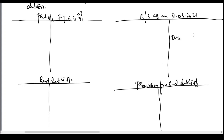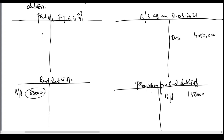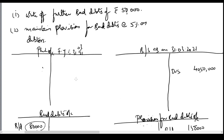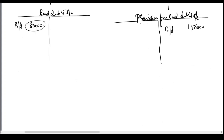In the balance sheet, debtors show 40,50,000. Bad debts has a debit balance brought down of 80,000 rupees, and provision for bad debts has a credit balance of 1,50,000 rupees. When there is no provision for bad debts, the loss is straight away debited to the profit and loss account. But in this problem, because we have a provision for bad debts, the bad debts amount cannot be debited to P&L. A specific account has been created — profits set aside in the past — so the loss should be set off against that provision.